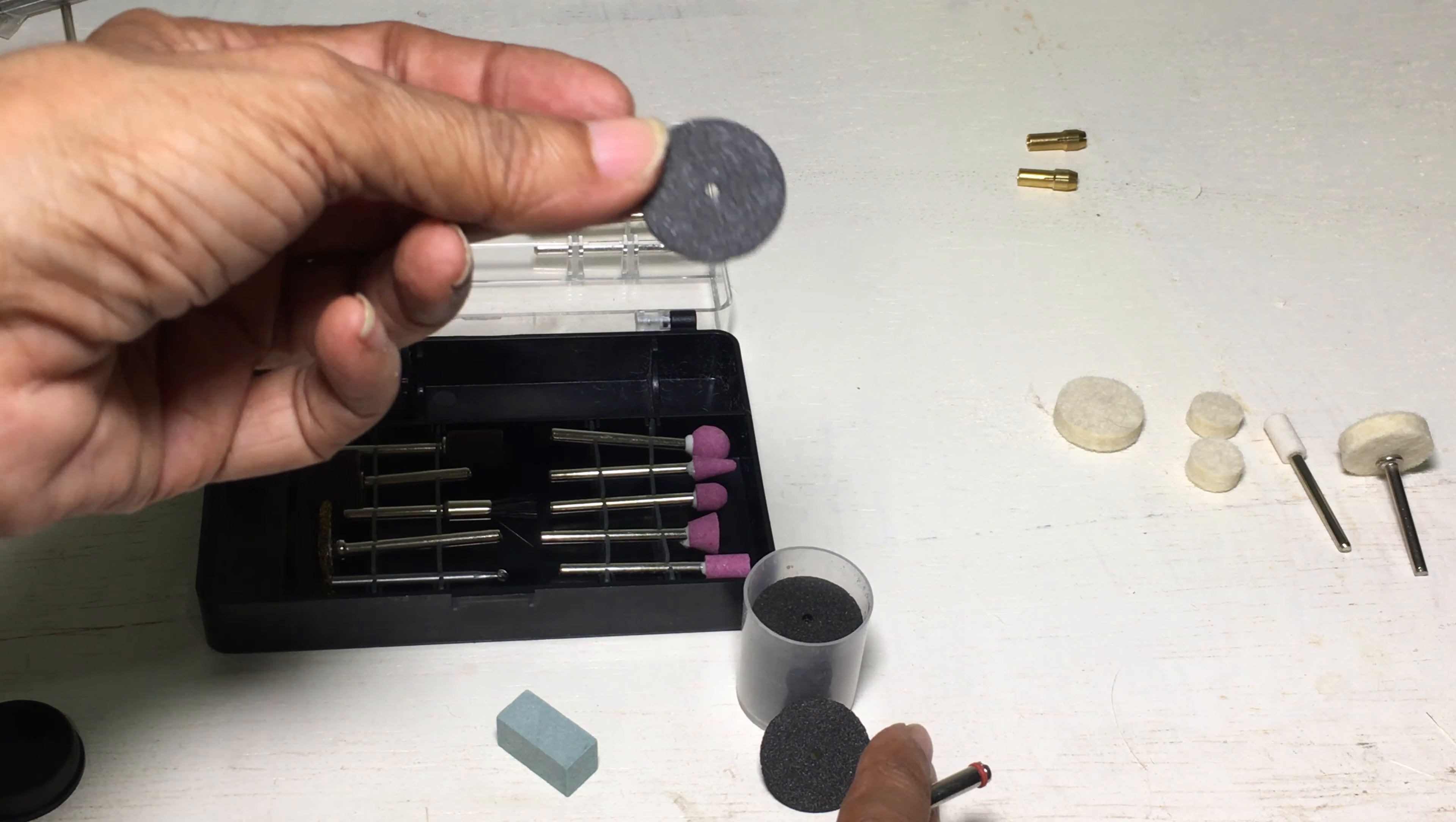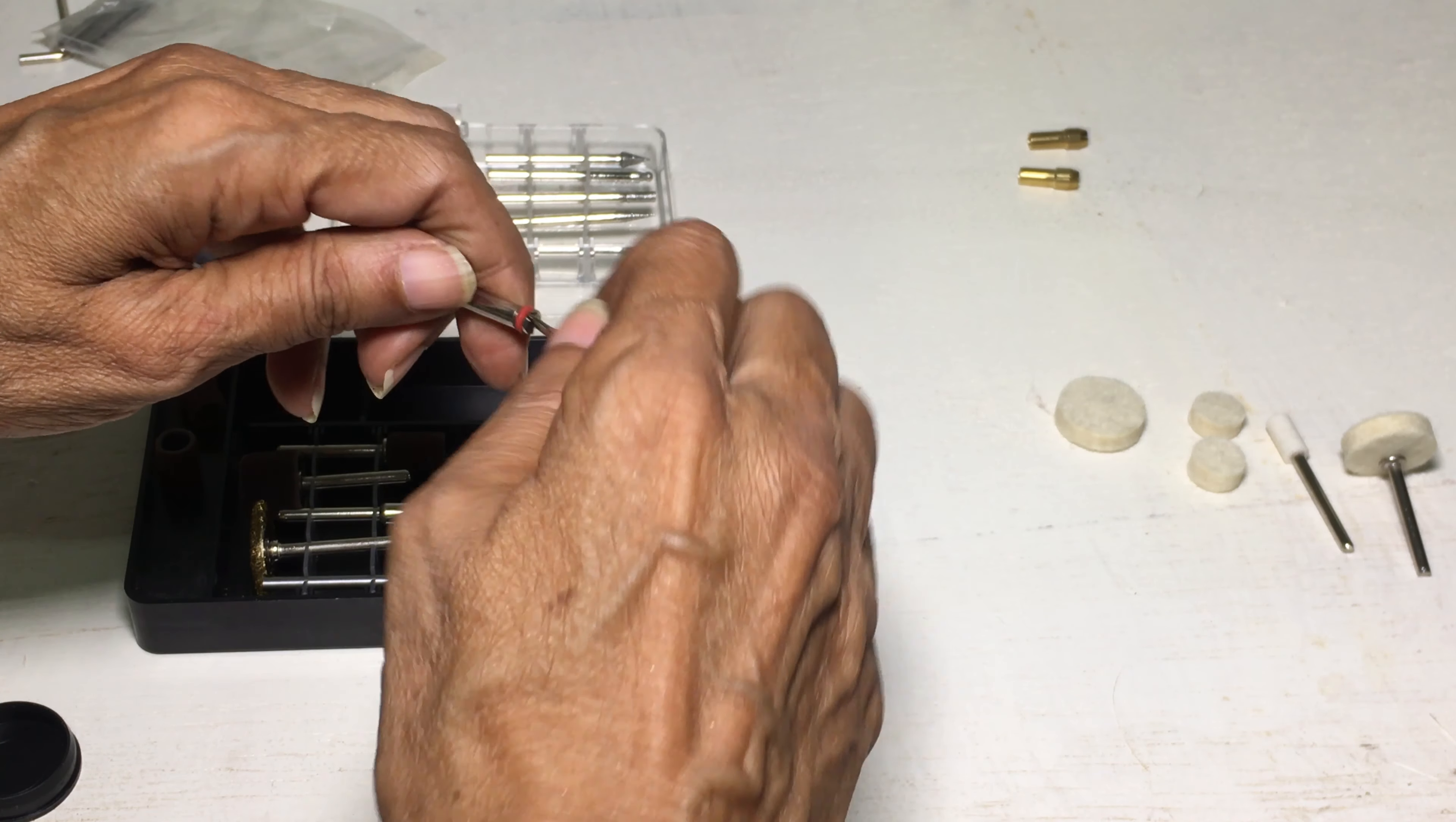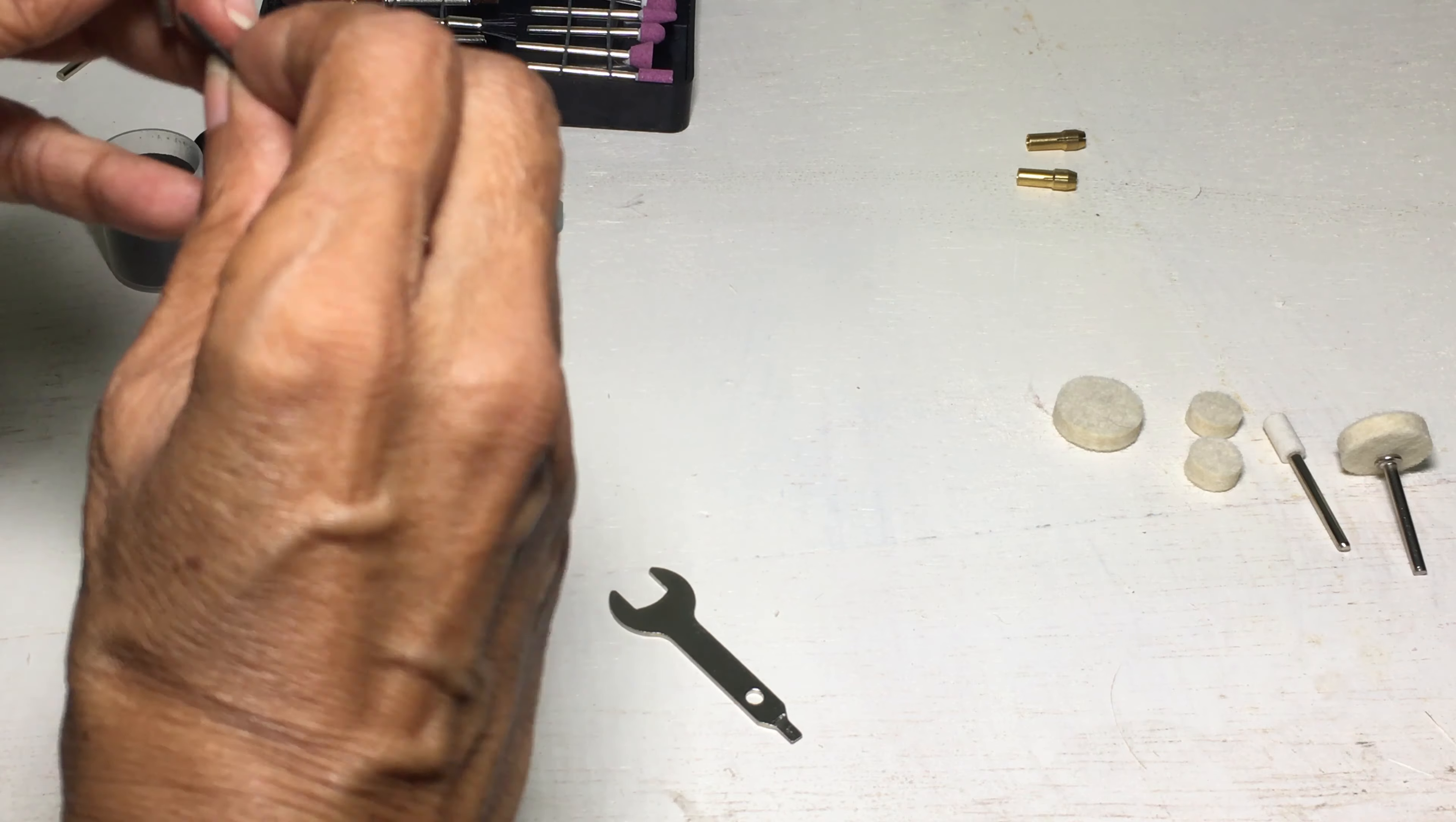The cut-off wheel and sanding discs are used with the threaded mandrel. Slacken the screw with the end of the wrench and place the disc between the two rubber washers and retighten.